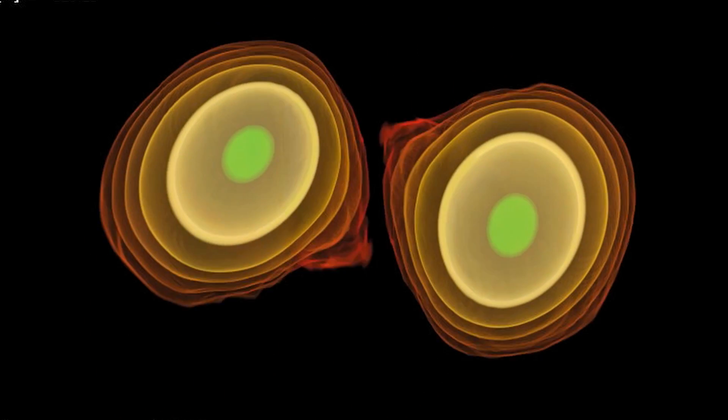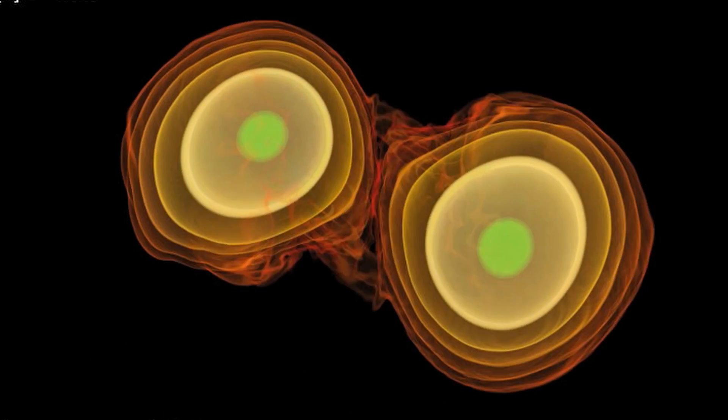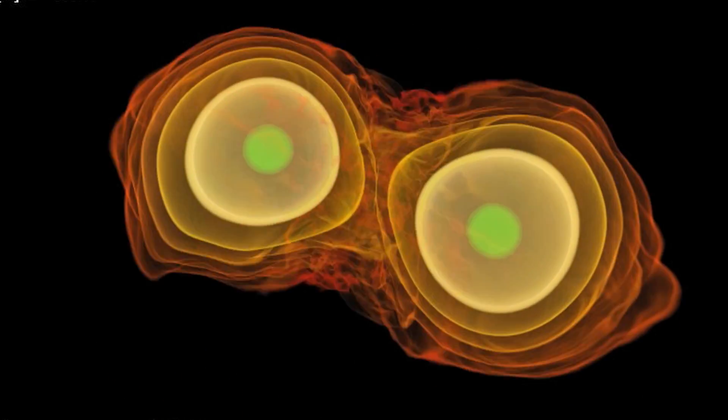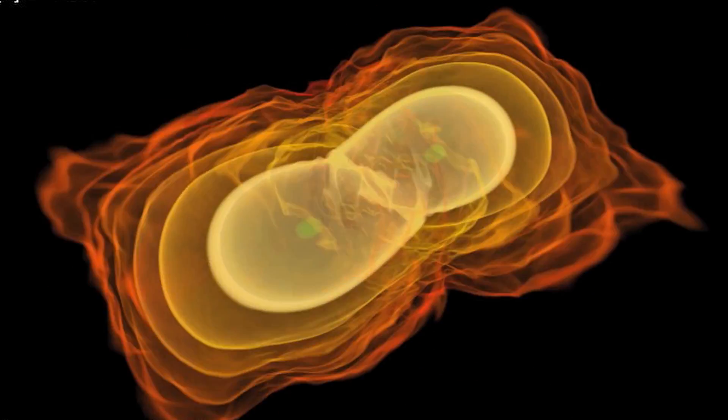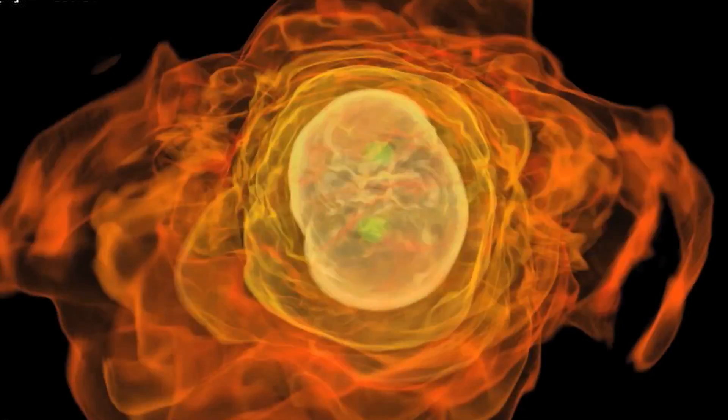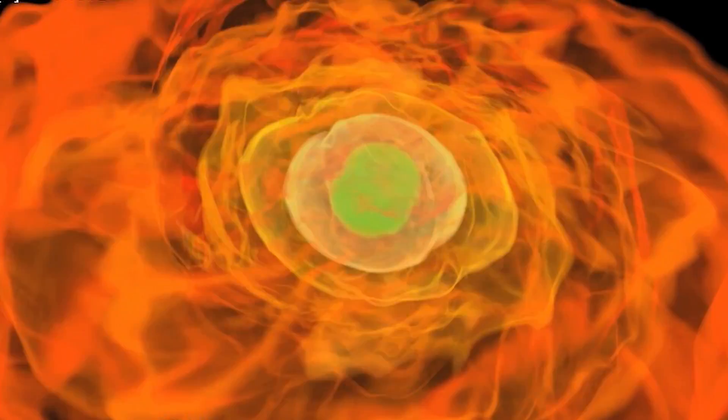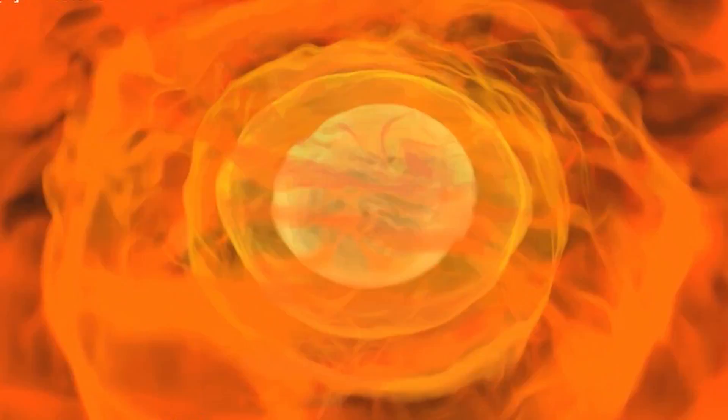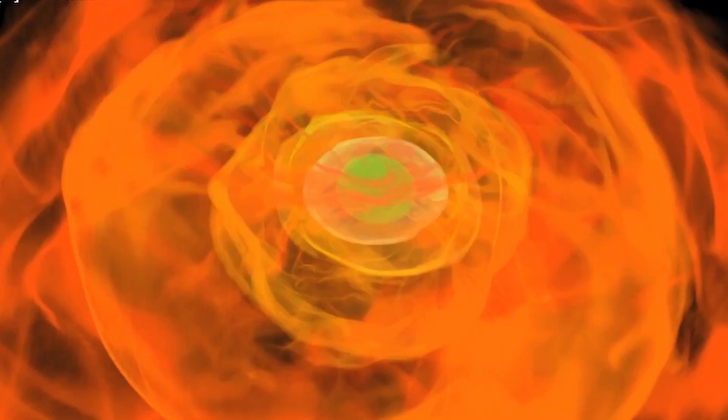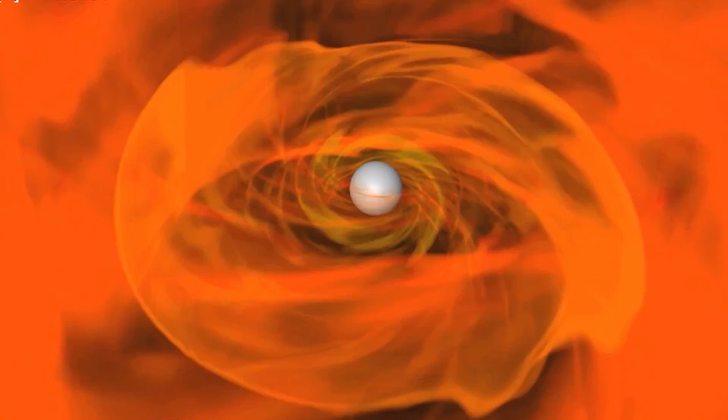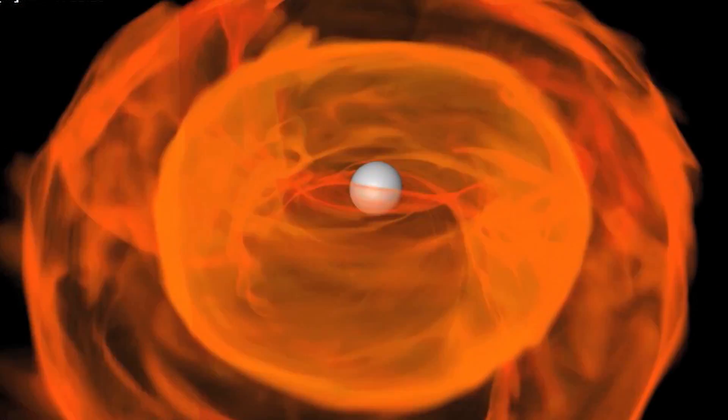Something they have in common though is that they don't just deform the space-time. They can also set it in rotation. If you are a little object in a tornado, you cannot stand still. You will have to turn together with a tornado. And here is not a tornado but it's the whole space-time that is rotating because of the presence of the black hole.